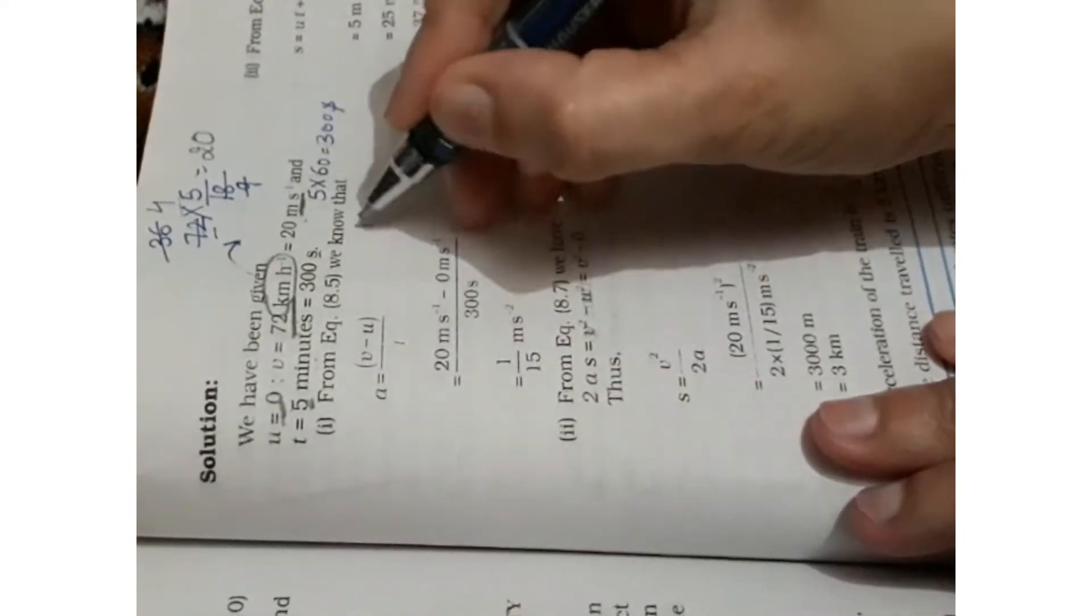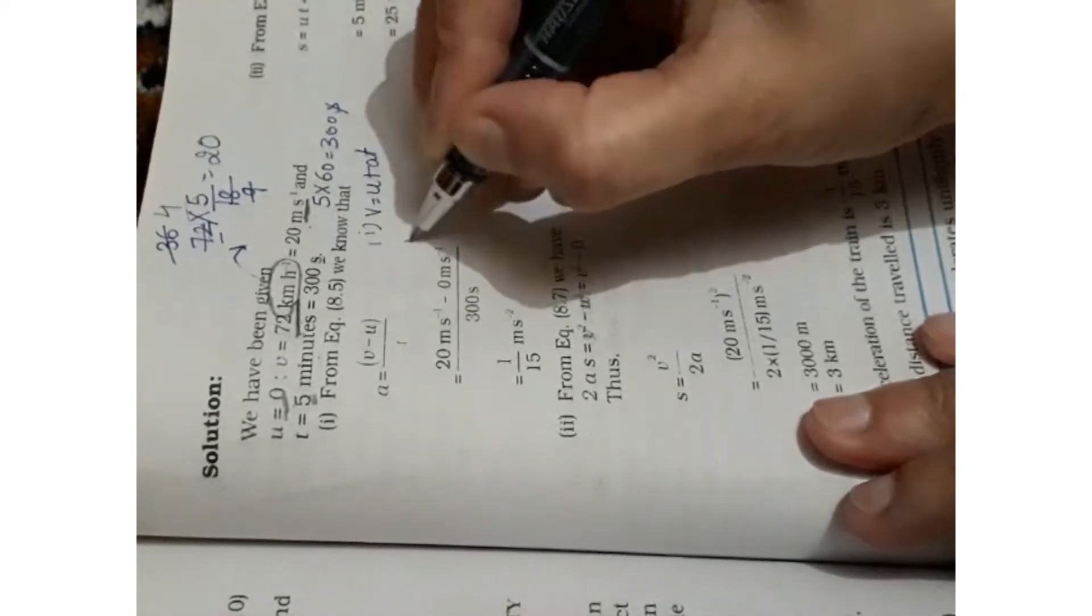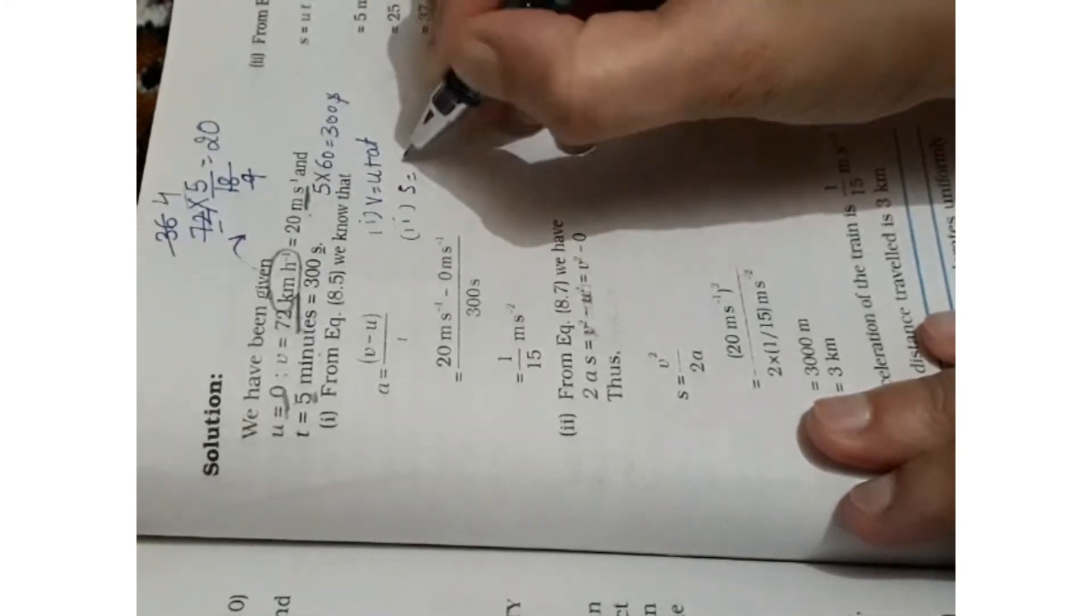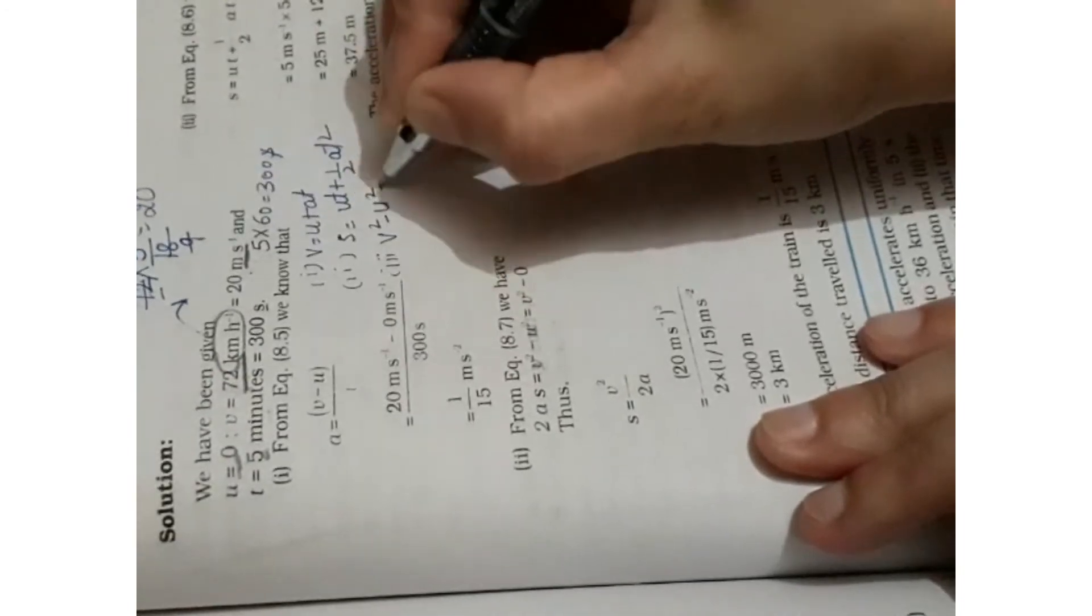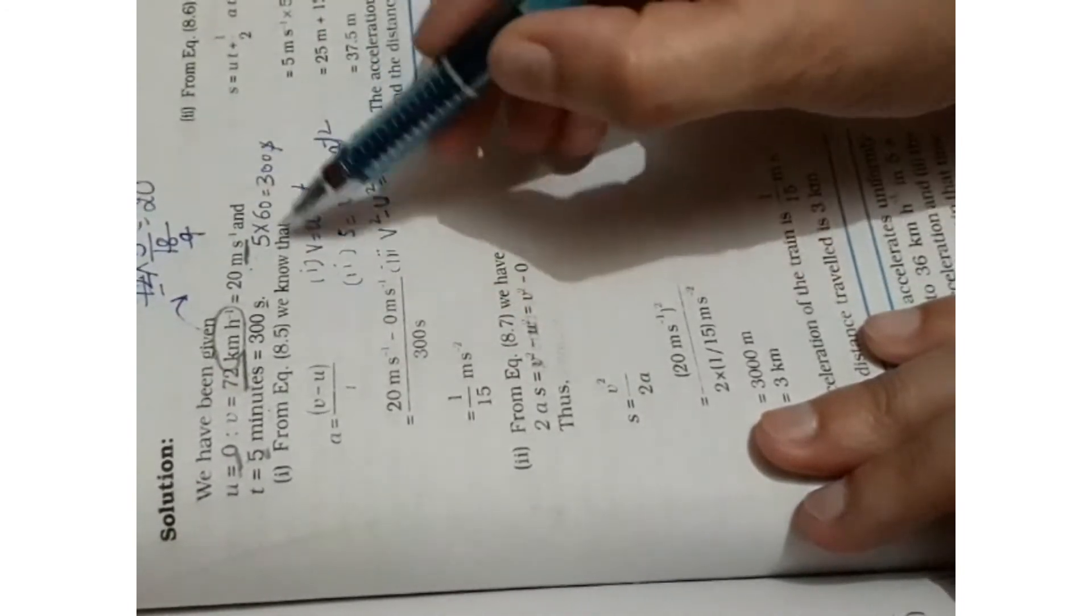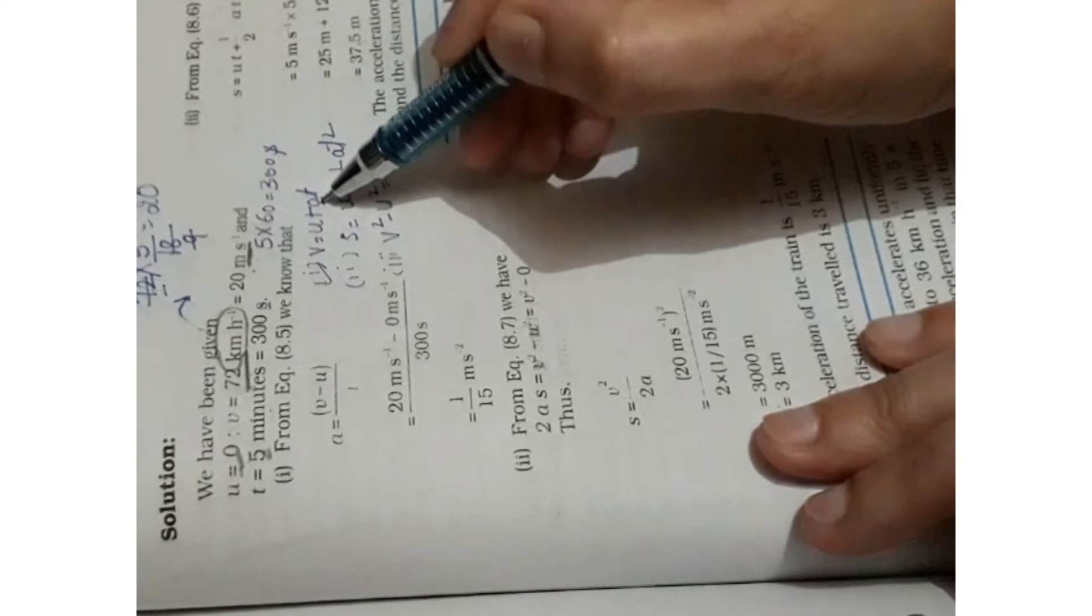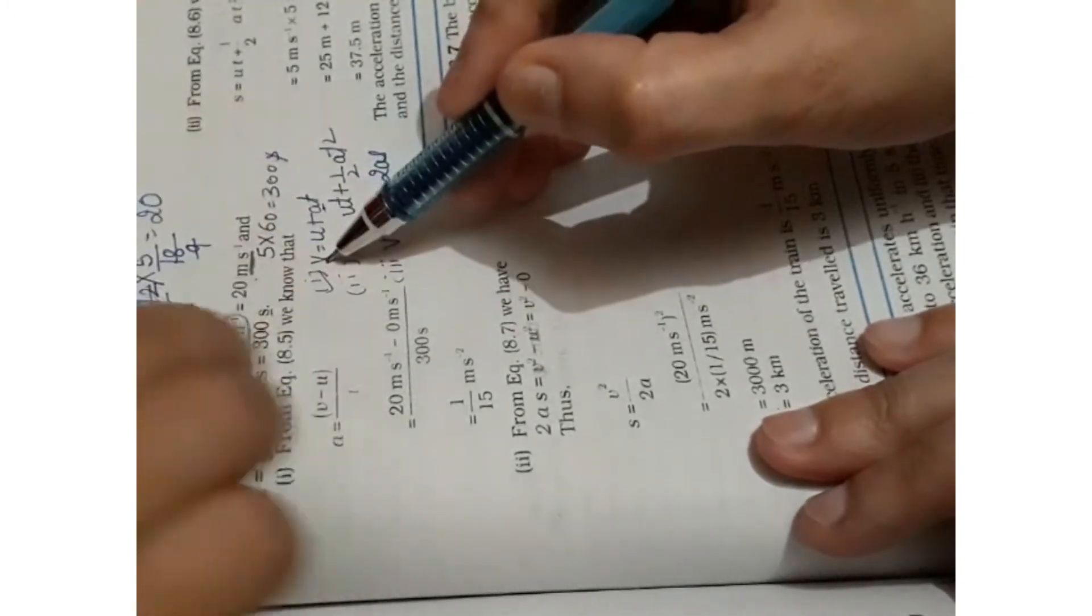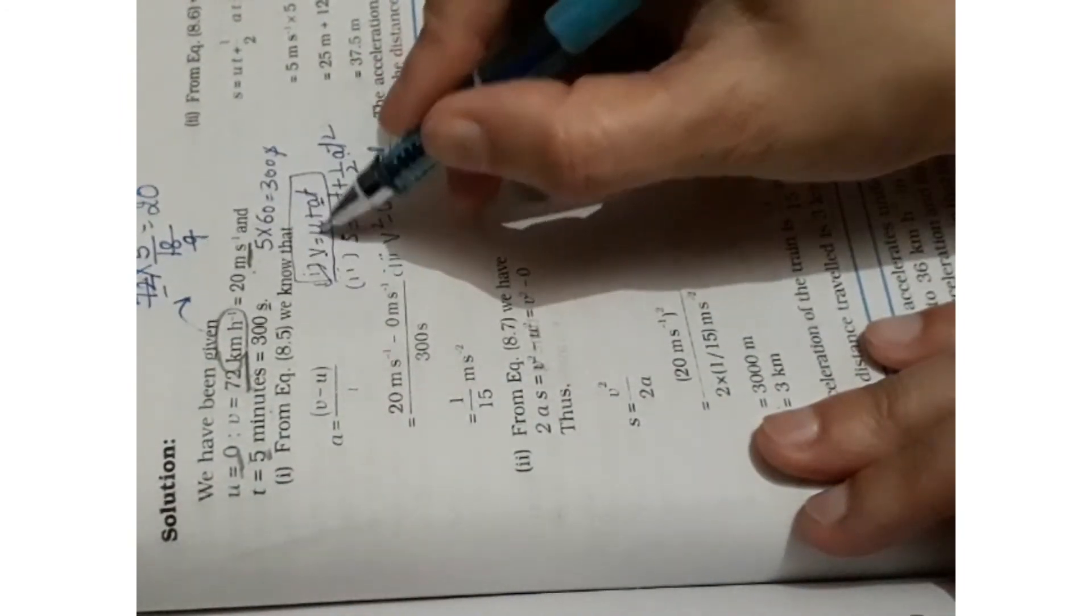Now what do we have to solve in question? Number one, we have acceleration. So we have three formulas. We have V is equal to U plus at. Second numerical formula s is equal to ut plus half at square. And the third one is v square minus u square equals to 2as. Now see what is the formula in these three? We will pick the first one because here is a. Time is given, u is given and v is given.